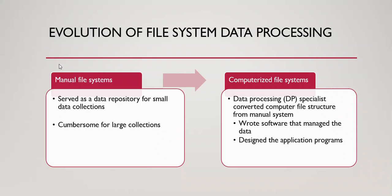We started with an initially manual file system — papers stored in folders. This becomes cumbersome for large collections. When there is a lot of data, it becomes difficult to manage. So we moved from paper to paperless, that is, a computerized file system. When we talk about computerized file system, we are talking about data processing — converting the computer file structure from the manual paper-based system, involving software.